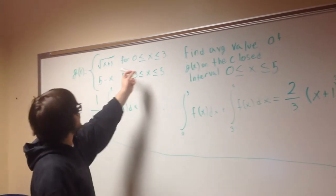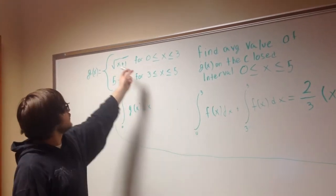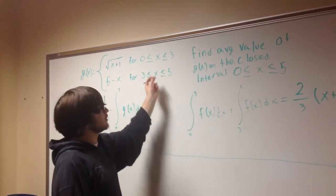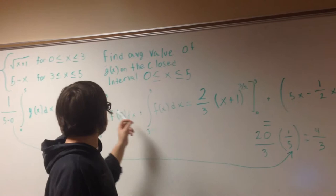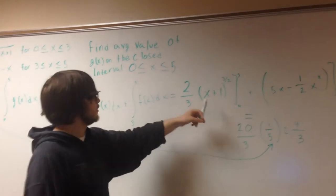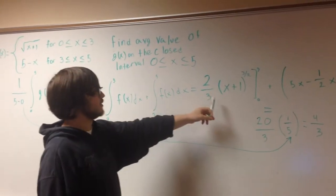You split it up from the parameters of each, so zero to three from the first one, and three to five to the second one. We're not going to get through all the work, but basically, you find the integral for each separate one.